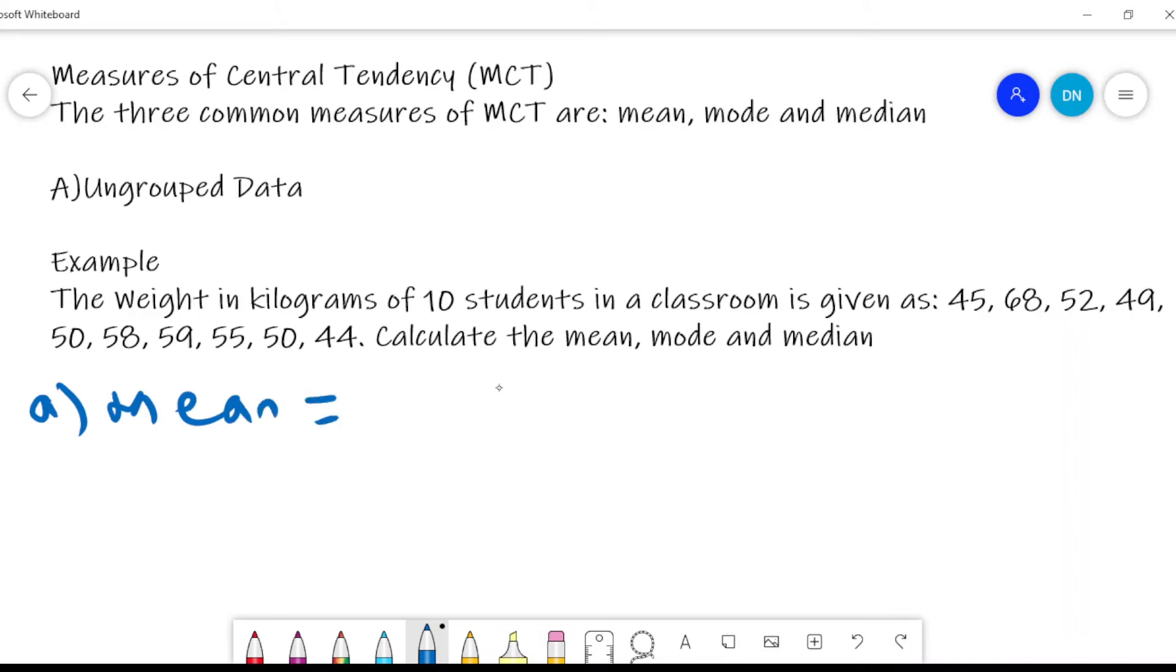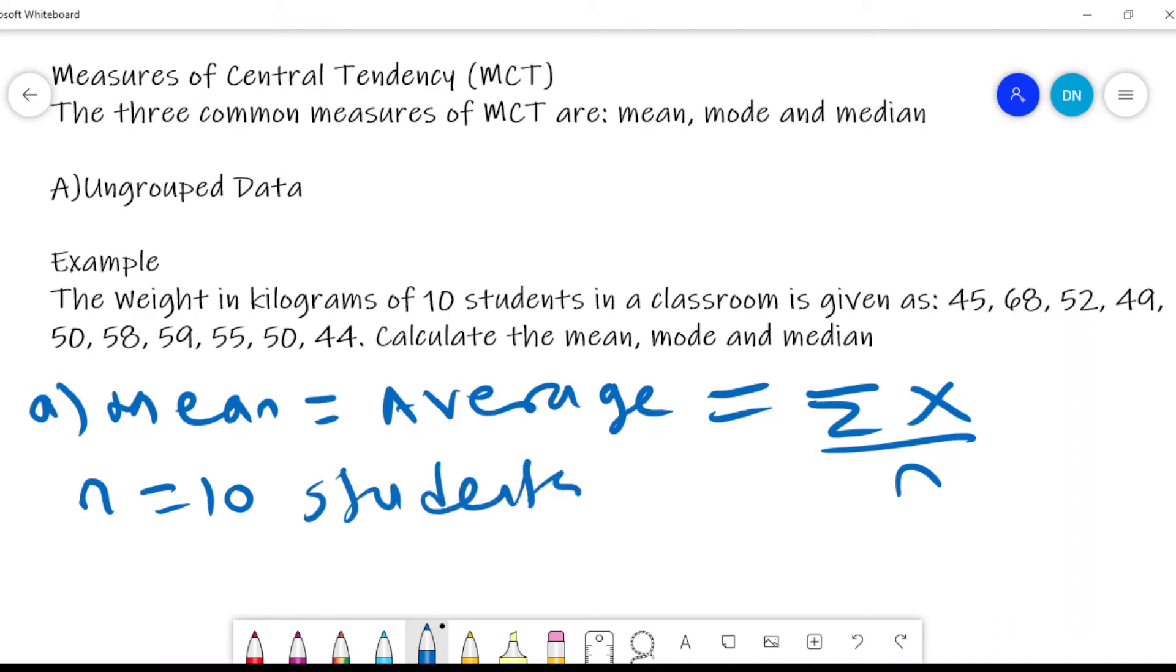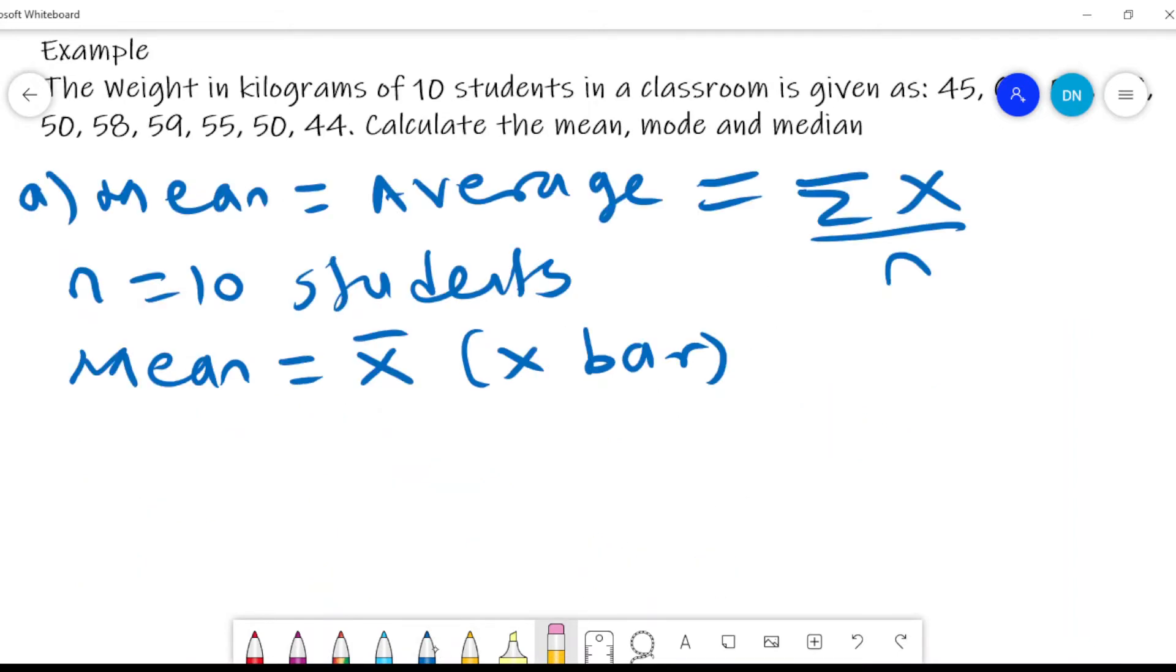The mean is also what we call the average value, and the mean is given by the summation of x divided by n. So what's the difference? n is the number of students, so n is equal to the 10 students. And the x are their respective weights. So basically, if we want to get the mean, which can also be written as x bar, we pronounce this as x bar, we want to compute the x bar.